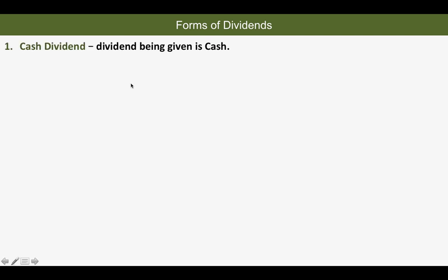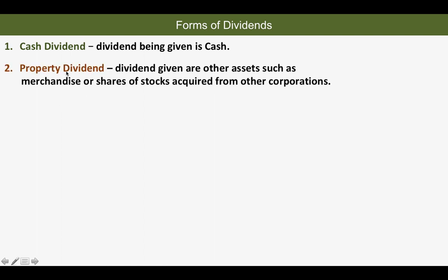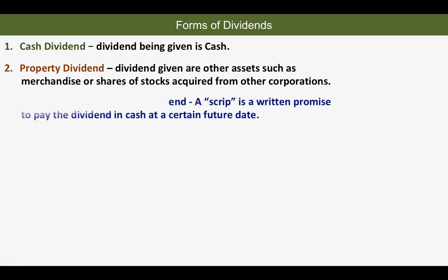The forms of dividends are: cash dividend, which is given in cash; property dividend, which involves other assets such as merchandise or shares of stocks acquired from other corporations — note that these shares are stocks of other corporations; and the third one is liability dividend or scrip dividend, where the scrip is a written promise to pay the dividend in cash at a certain future date.